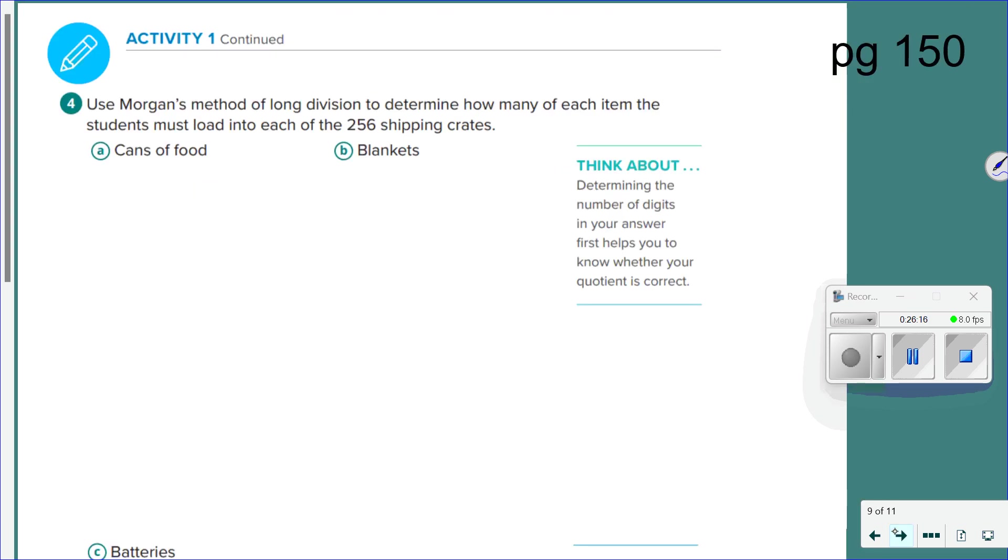So we're going back to the Carnegie Middle School's not clothing drive. What was it? Just a relief drive. There we go. And using the numbers they gave you for each of these items, cans of food, blankets, and batteries to see how many of each item will go into 256 shipping crates. So you're working out those three division problems using those numbers. And then we will come back and talk about it in about six minutes. Go for it.